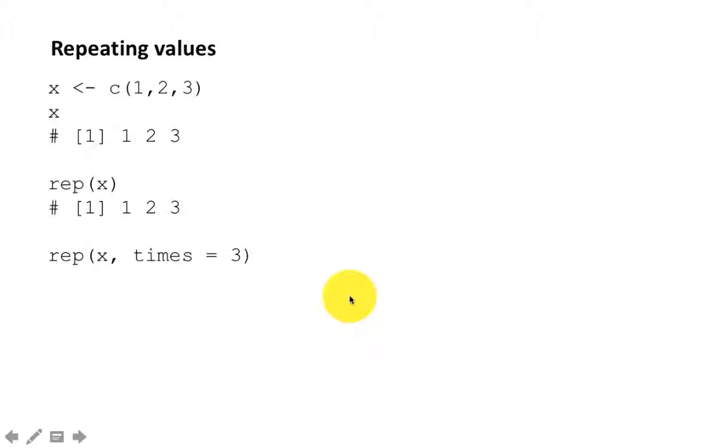But you can indicate how many times to replicate. If you did this, you would get 1, 2, 3, 1, 2, 3, 1, 2, 3, three times. So it's replicated three times. That's what the rep function does.